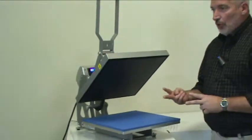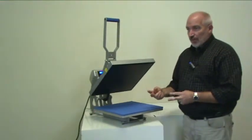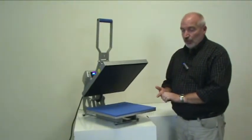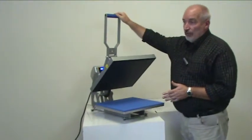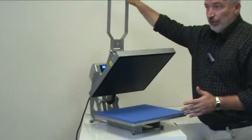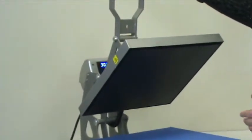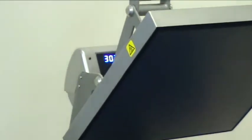There are three major components to heat printing: time, temperature, and pressure. We call that the trinity of heat printing, and this press regulates all of them very accurately and digitally, so it's very accurate when you're trying to apply specific items.